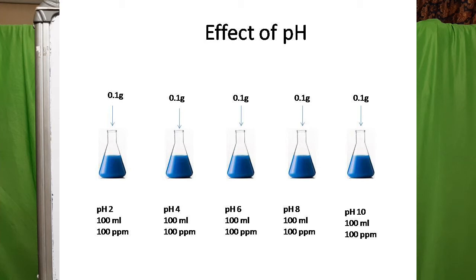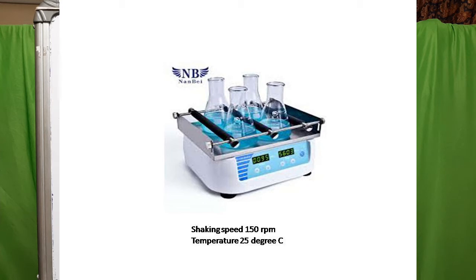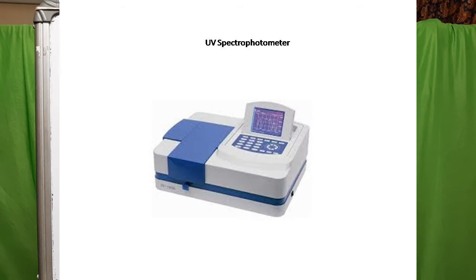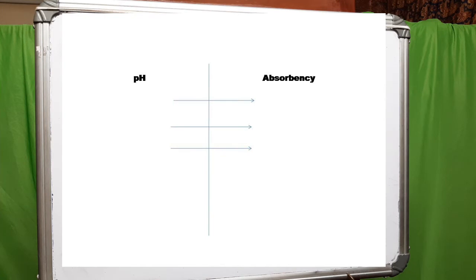Each conical flask will be sealed using cotton. These values are used here but it is not mandatory — you can choose any constant values as you wish. Each conical is placed in an incubator shaker and shaken for 300 minutes at 150 rpm and 25 degrees centigrade. After 300 minutes, the conicals are taken out, filtered, and the absorbance of the filtrate is measured using a UV spectrophotometer to get the absorbance values at each individual pH.